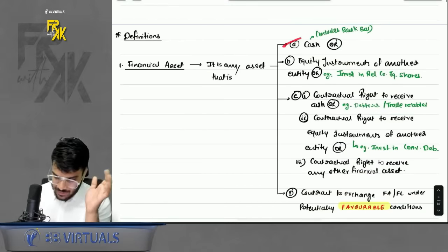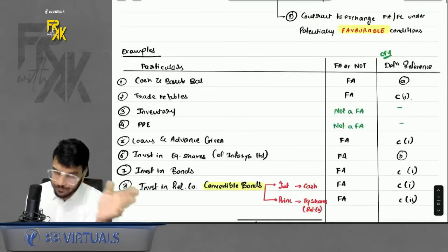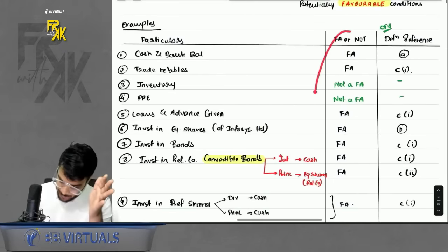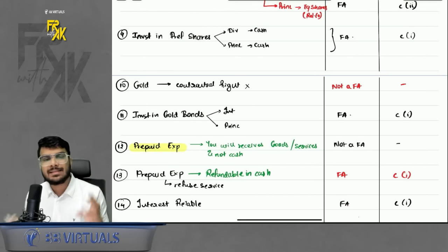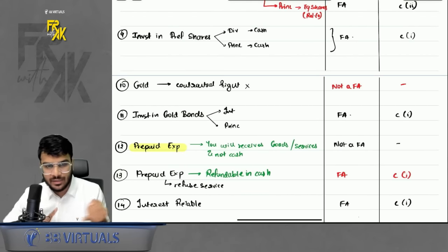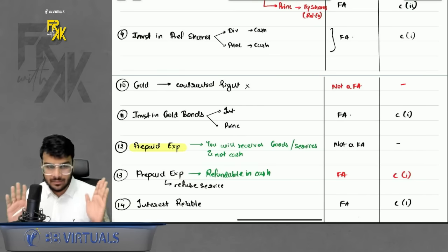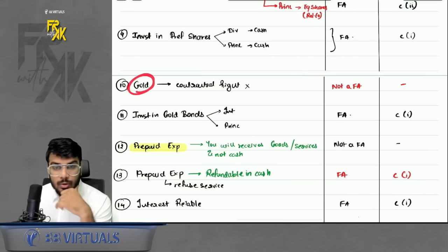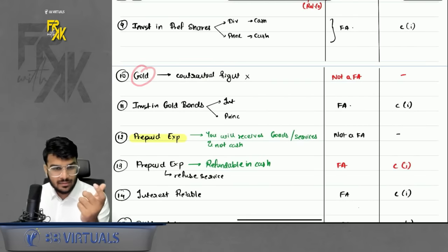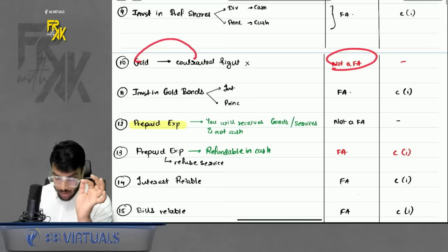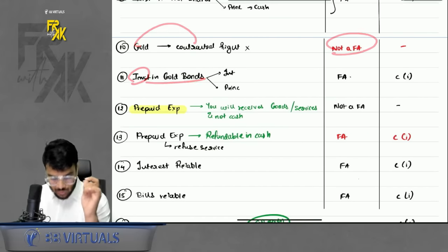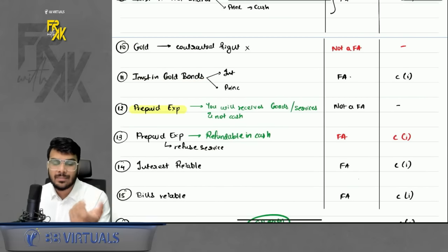Investment in Reliance convertible bonds — financial asset, because interest is received in cash and principal is received in equity shares. Any investment — whether in preference shares, bonds, debentures, equity shares, or convertible instruments — is a financial asset. What about gold? Gold can be converted into cash but there is no contractual right, so it is not a financial asset. But if you invest in gold bonds, it becomes a financial asset.